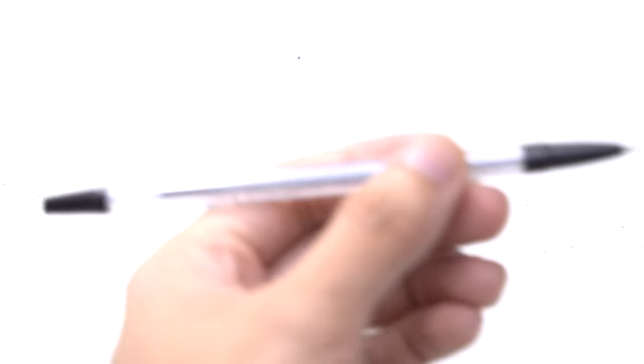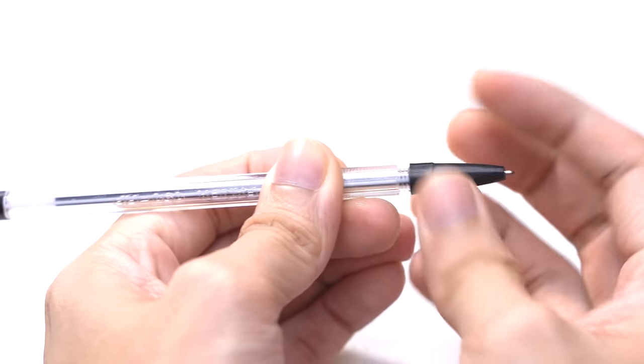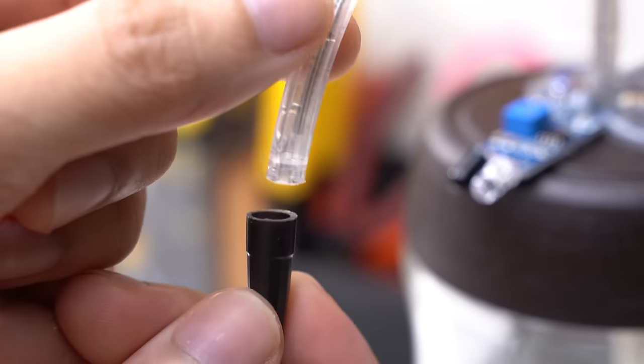To limit the flow of liquid, you can salvage the tip of a dried-out pen and use it as a nozzle for your dispenser's outlet.